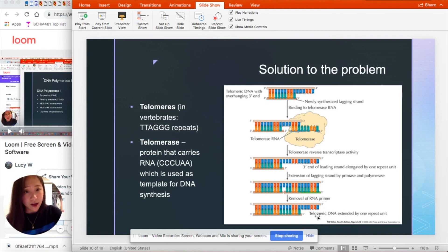And the RNA primer on the lagging strand is now pushed into a buffer zone. And so there will be no gap when primer gets removed. So there won't be shortening of the chromosome.